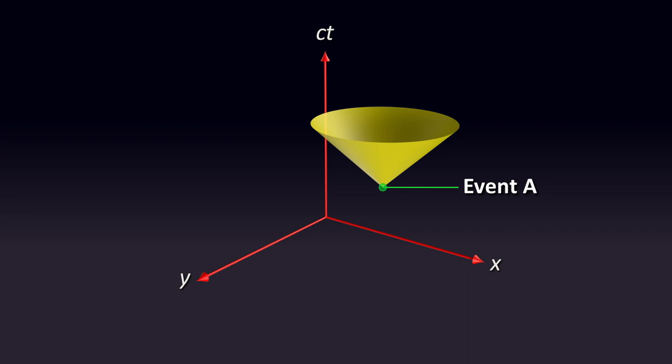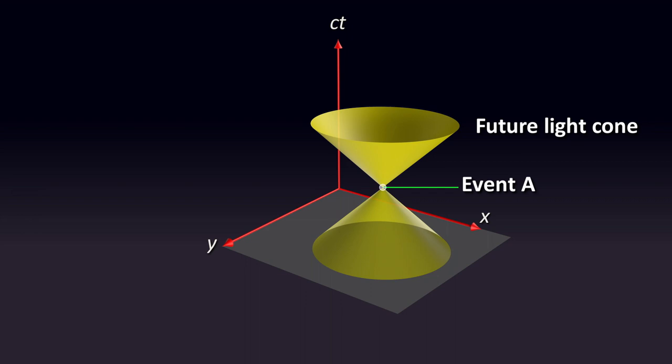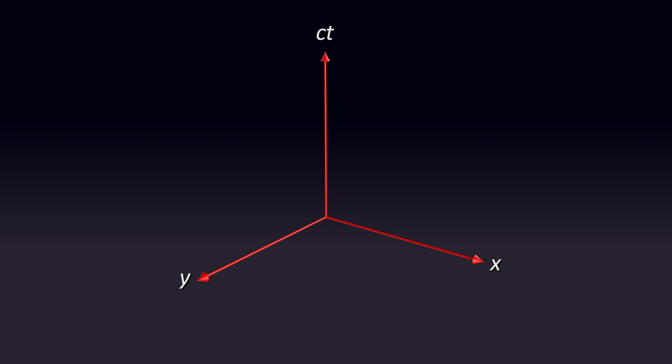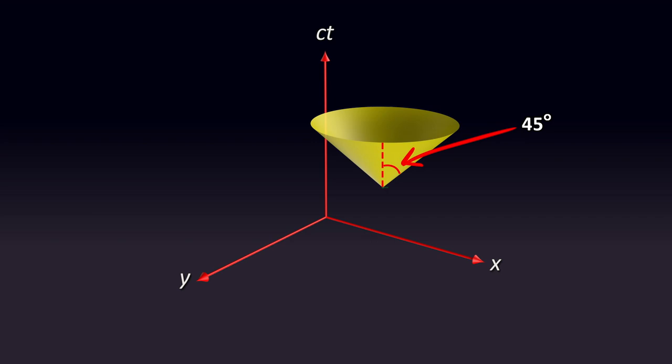The volume of the cone represents all future events that can be causally connected to event A. Event A also has a past light cone, which represents all events in the past that are causally connected to event A. Points outside the cone are events that are causally disconnected from event A. In other words, they can't have an effect on event A. The coordinates are made so that anything moving at the speed of light will always create a 45 degree angle from vertical. So the world line of any moving object will always be somewhere within or on the cone.